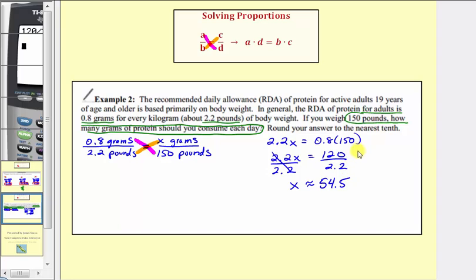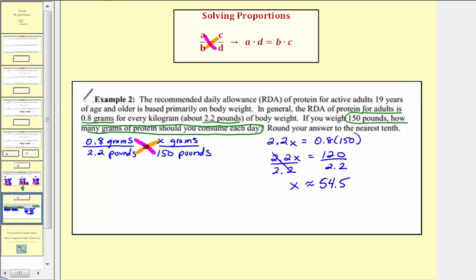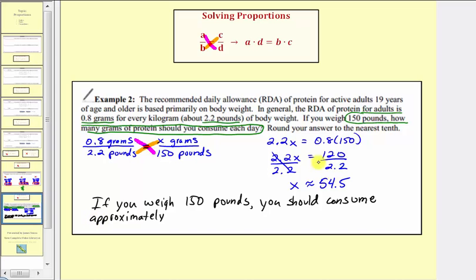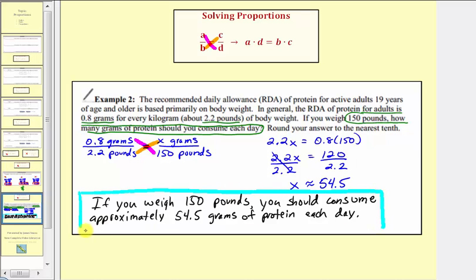Now let's go ahead and put our answer in a complete sentence. If you weigh 150 pounds, you should consume approximately 54.5 grams of protein each day. I hope you found this helpful.